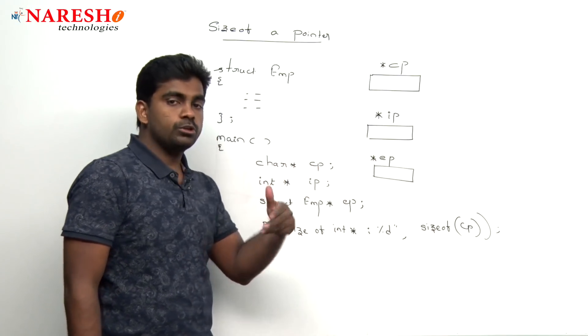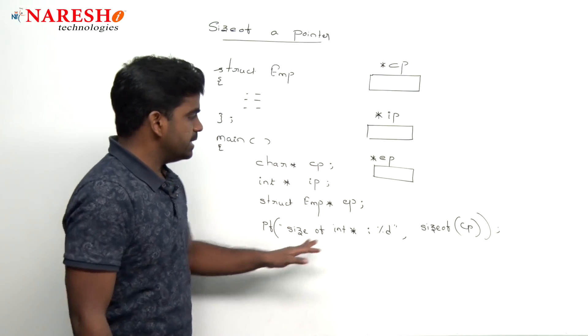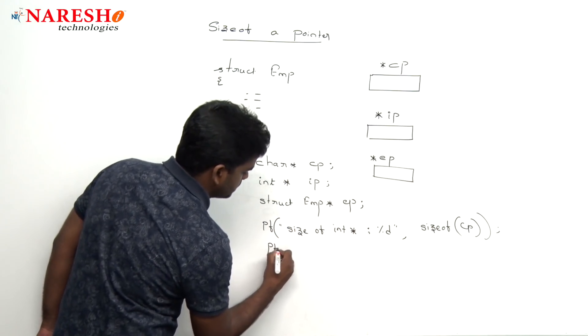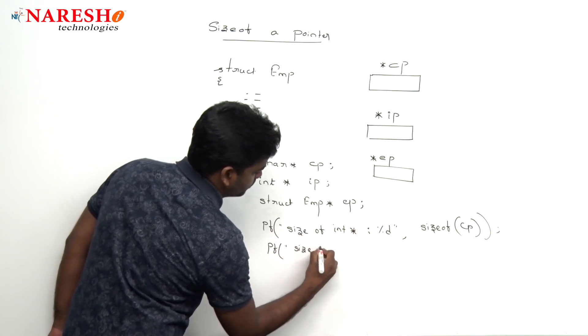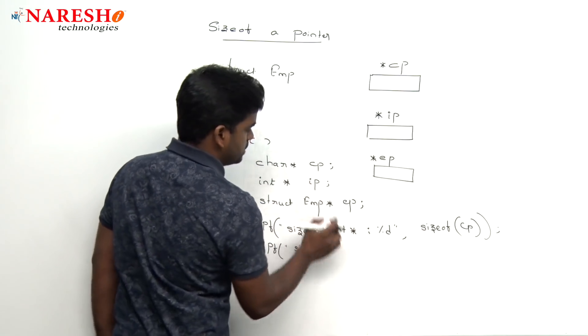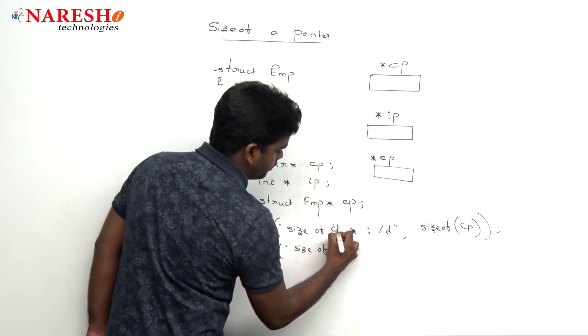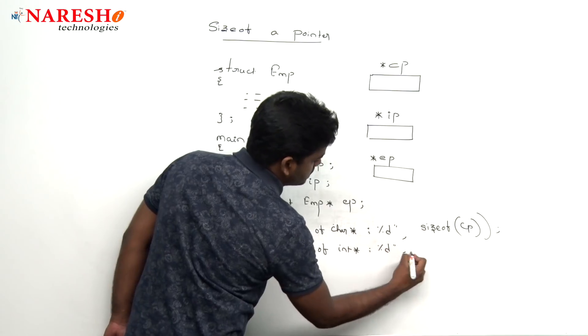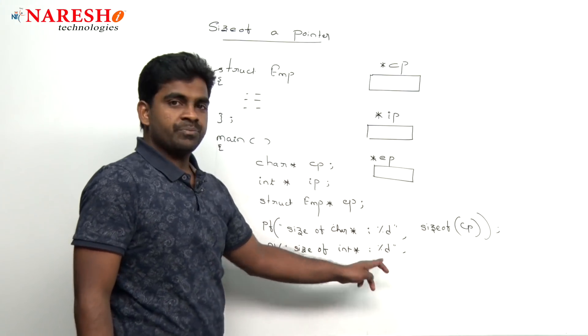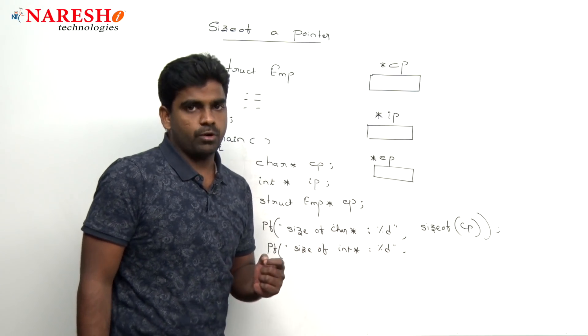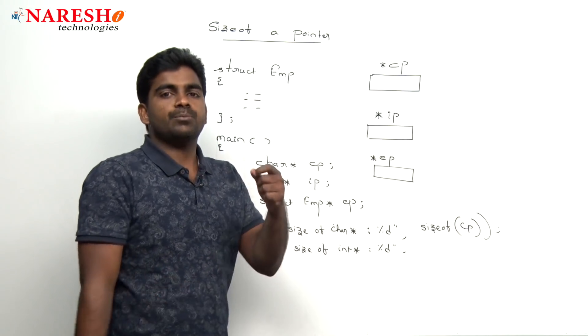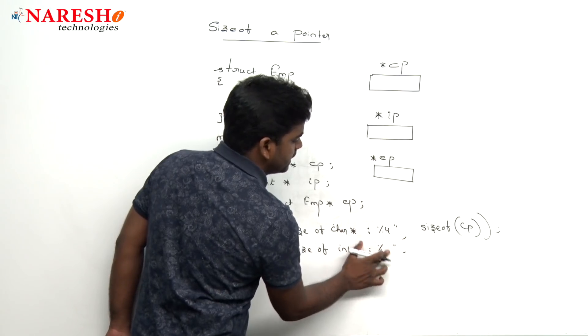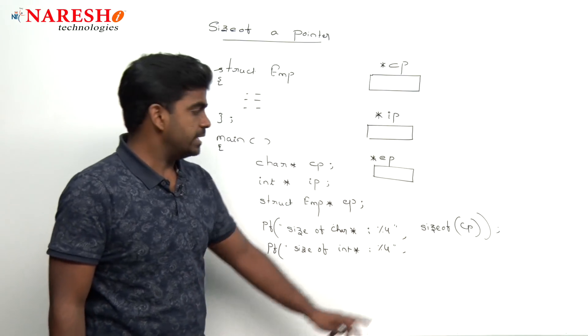So variable and type both you can pass. Here it is sizeof cp and next one in the same way just printf sizeof, this is character pointer and this is integer pointer. But format specifier always is percentage d only because the address is always in integer format. Strictly to say it is a positive integer, you can use that percentage u unsigned integer more clearly.